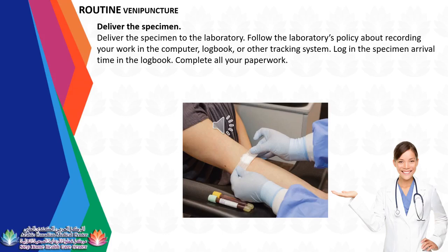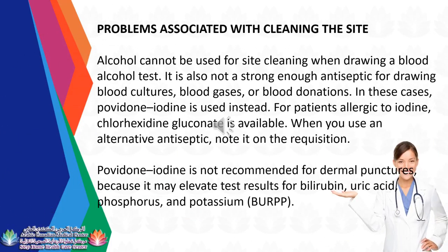Problems associated with cleaning the site: Alcohol cannot be used for site cleaning when drawing a blood alcohol test. It is also not a strong enough antiseptic for drawing blood cultures, blood gases, or blood donations. In these cases, povidone-iodine is used instead. For patients allergic to iodine, chlorhexidine gluconate is available. When you use an alternative antiseptic, note it on the requisition. Povidone-iodine is not recommended for dermal punctures because it may elevate test results for bilirubin, uric acid, phosphorus, and potassium.